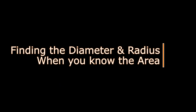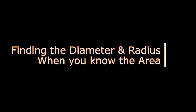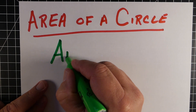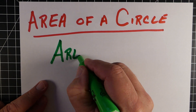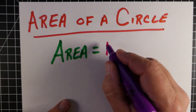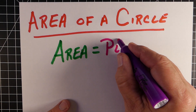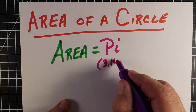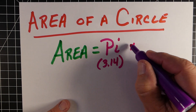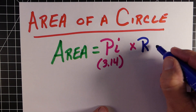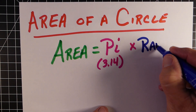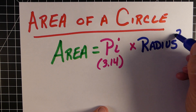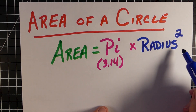In this video, we're looking at finding the diameter and radius of a circle when you already know the area. The formula for finding the area of a circle is pi — which we use as 3.14 — multiplied by the radius squared. The radius is the distance halfway across the circle.